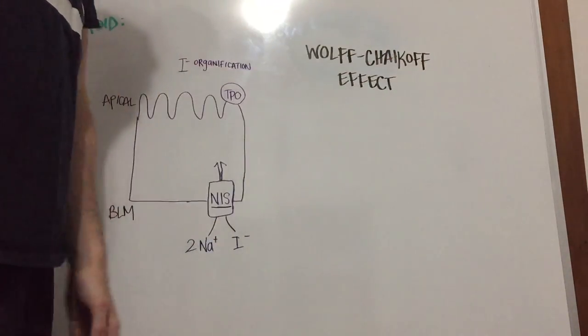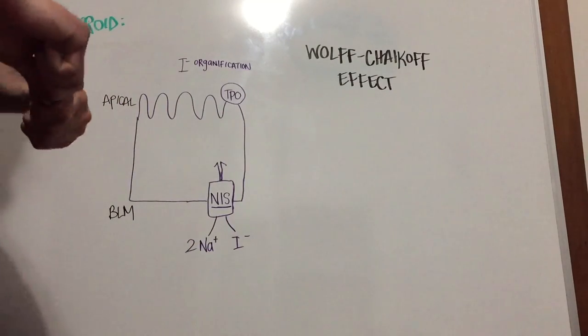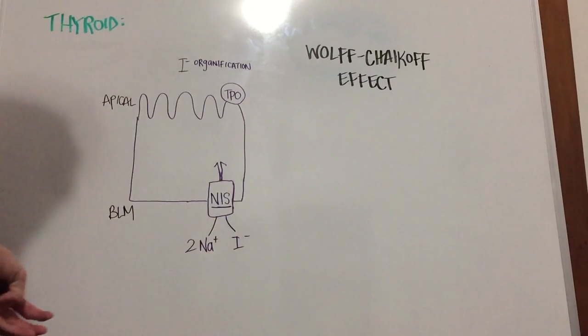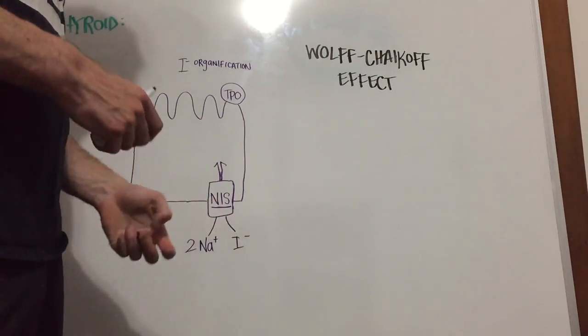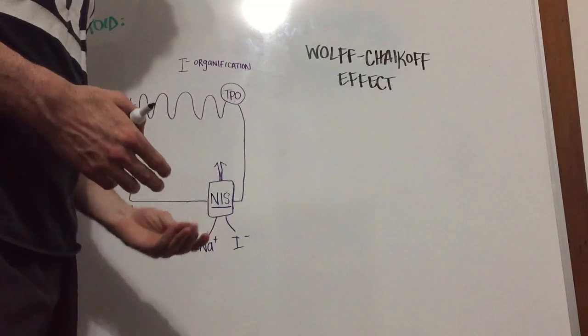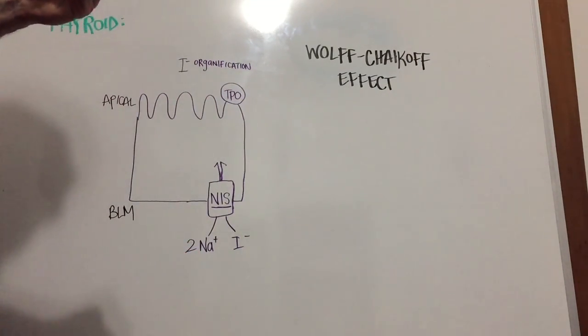So in the Chaikoff lab at University of California, Berkeley, and I think it was '48, Dr. Hans Wolff discovered that if you give exceedingly high levels of iodide to rats, there's going to be a decrease in the organification process and therefore a decrease in T4 and T3 made in the animals.